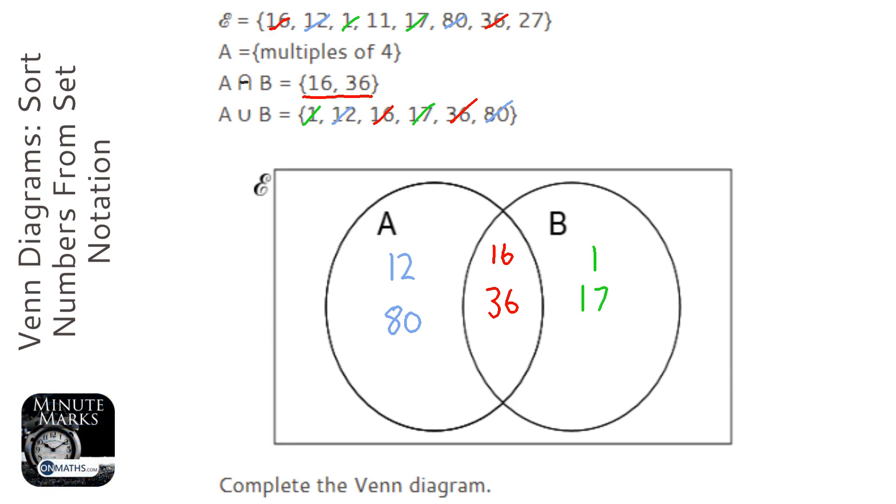The problem is, it says that we also have 11 and 27, and they've not been assigned to anywhere inside the Venn diagram. So they're going to go outside.